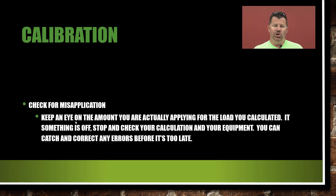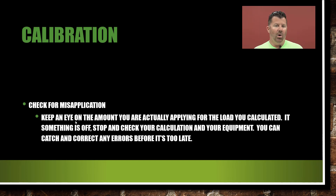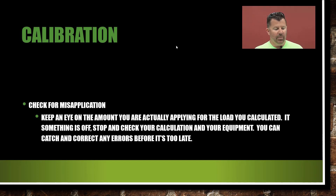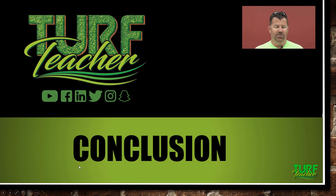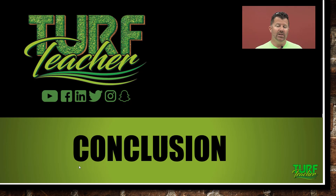When calibrating your equipment, always check for misapplication. Keep an eye on the amount you are actually applying for the load you calculated. If something is off, stop and check your calculation and your equipment — you can catch and correct any errors before it's too late. Always make sure you get within at least 10% of the desired application rate on the label. Calibration is super important — it's all about safety, saving money, and being a steward of the land and a professional. Take pride in your work, get licensed, get your continuing education, and go out there and make some money.